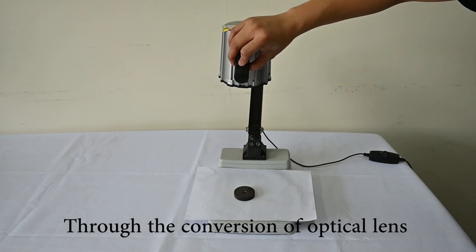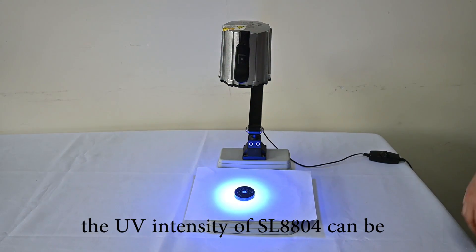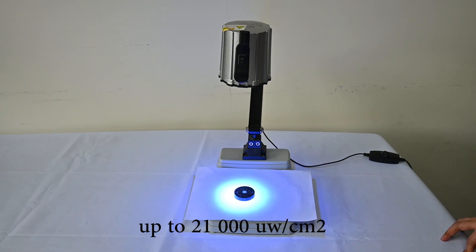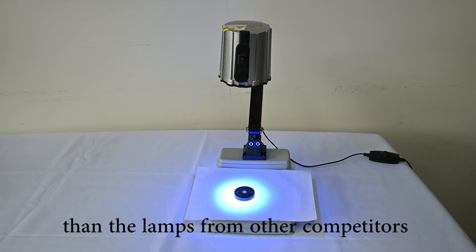Through the convection of the optical lenses, the UV intensity of the SL-W804 can reach up to 21,000 milliwatts per square centimeter, which is much more powerful than lenses from other competitors.